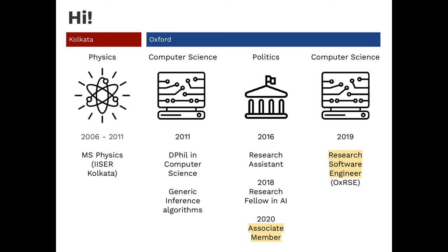First, a bit about me. I started with an undergraduate degree in physics from IISER Kolkata in 2006 and then moved to Oxford in 2011 to start my DPhil in computer science. Much to my surprise, there was very little coding in my thesis, which was on theoretical machine learning and generic inference algorithms.